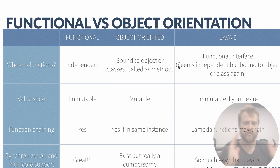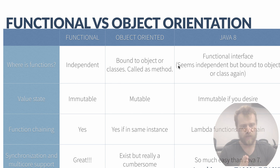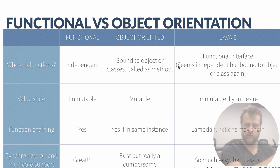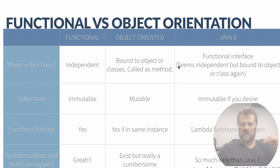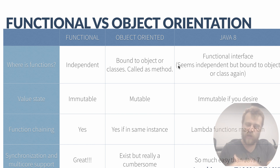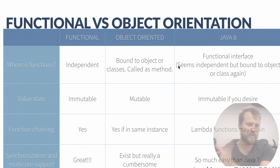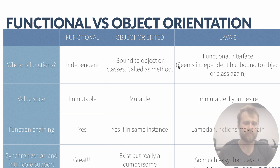In Java 8, we are in between these two types. We have functional interfaces and we may define functions independently and refer to them independently and invoke them. They seem totally independent to us, but in the background these functions are again bound to some object instances — we just don't see it. So to be optimistic, we may say that functions are independent programming units inside Java 8.